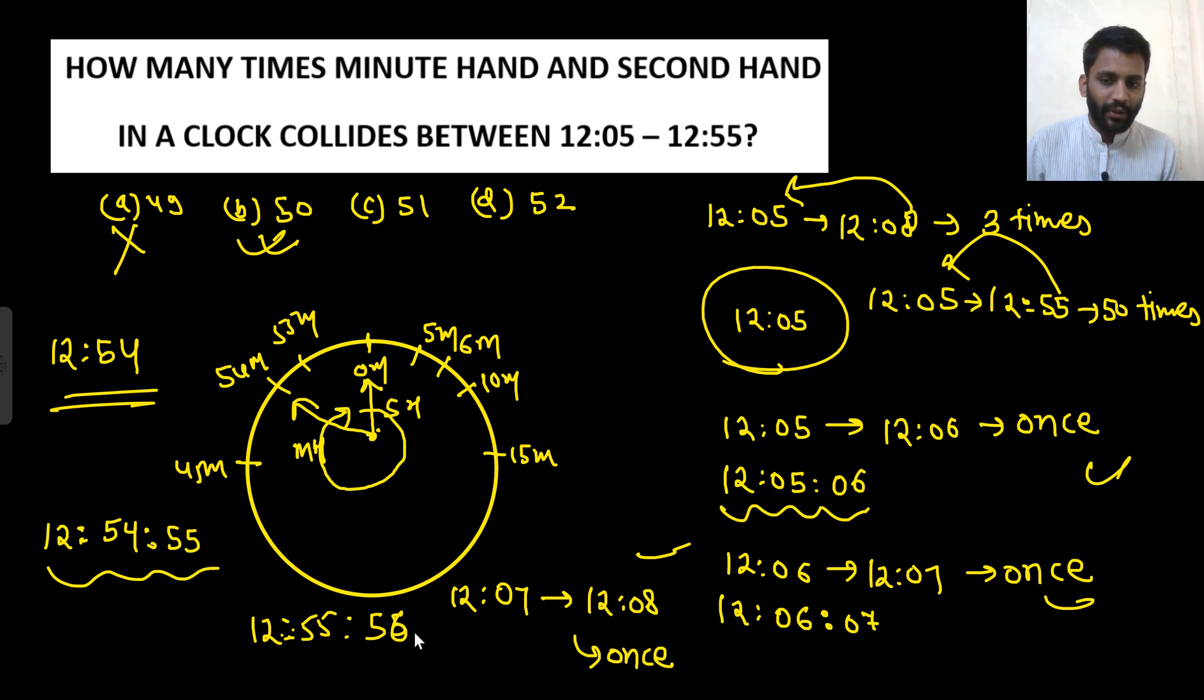Are you getting my point? So 12:55 will not come in action, but 12:54 will certainly come in action. This is what they have missed. That's why they are saying 49, but the answer is 50.